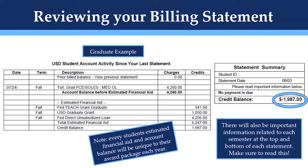A credit balance that is listed on your billing statement as a result of estimated financial aid will only be issued to you if you make sure to complete all of your financial aid requirements on your financial aid page of your portal. If any requirements are missing and your financial aid does not disperse, you will not receive the refund that was on your billing statement as a credit until those requirements are completed.